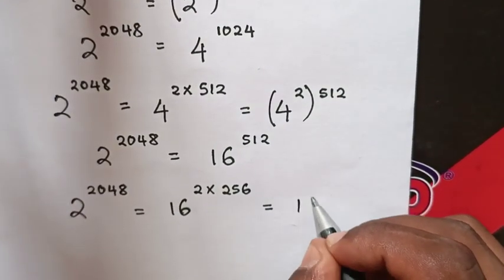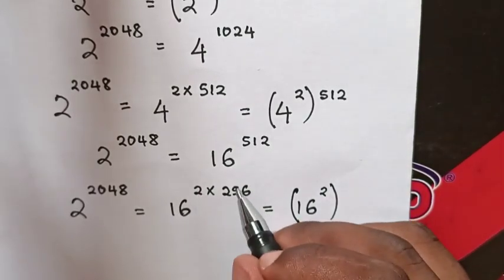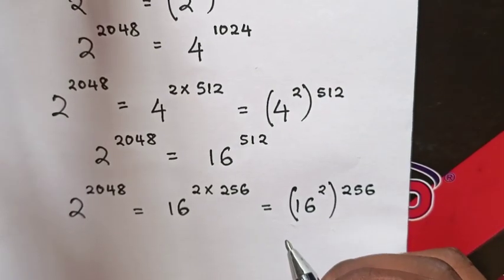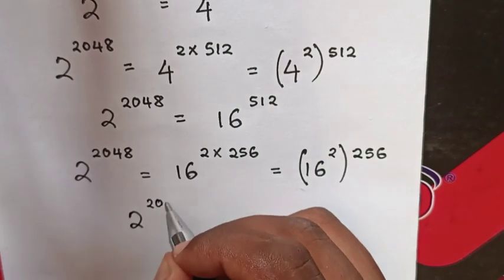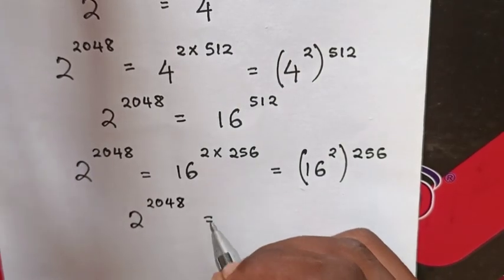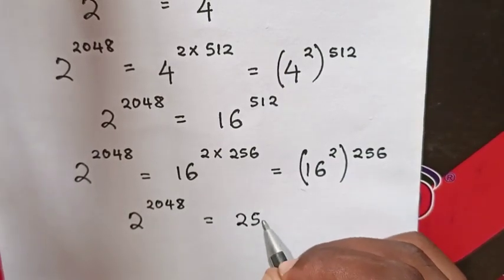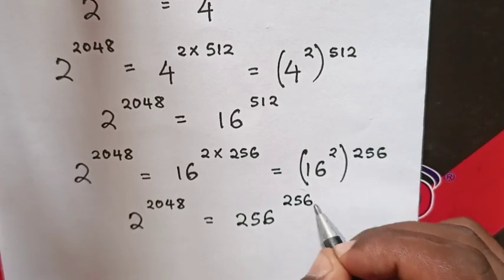(16^2)^256, which equals 256^256. So 2^2048 equals 256^256.